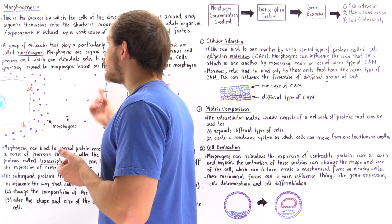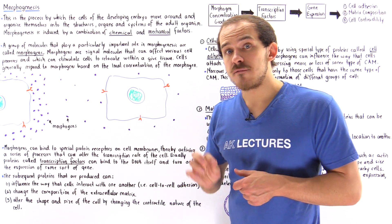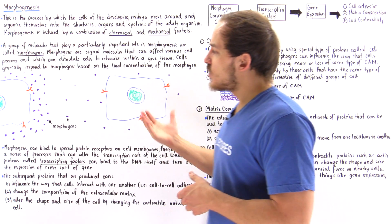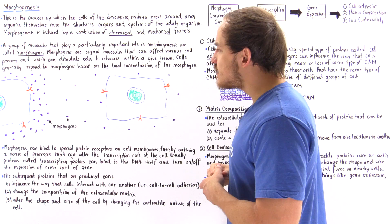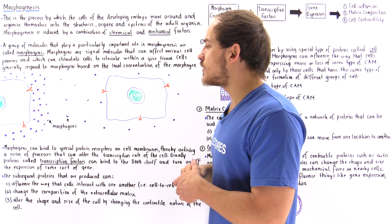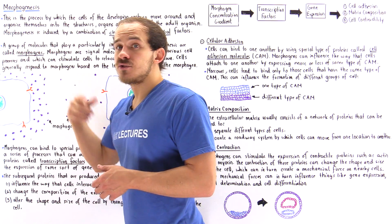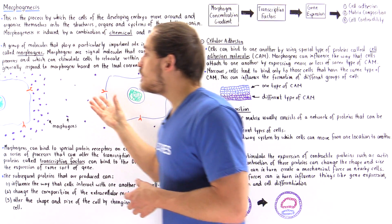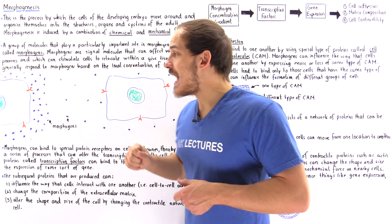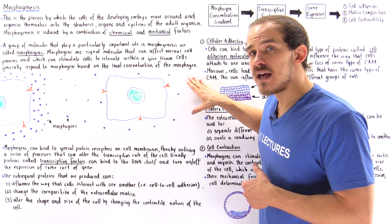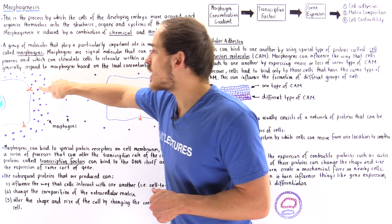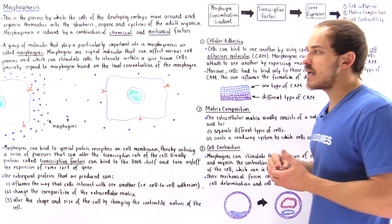Cells generally respond to morphogens based on the level or the concentration of that morphogen found in their local environment. Looking at the diagram, we have cell number one and cell number two. These cells have special protein receptors on their membranes that can bind these morphogens. Notice on the left side we have a much higher concentration of morphogens than on the right side, so signal molecules will be much more likely to bind onto the receptor protein of the left cell, causing different intracellular processes in each cell.